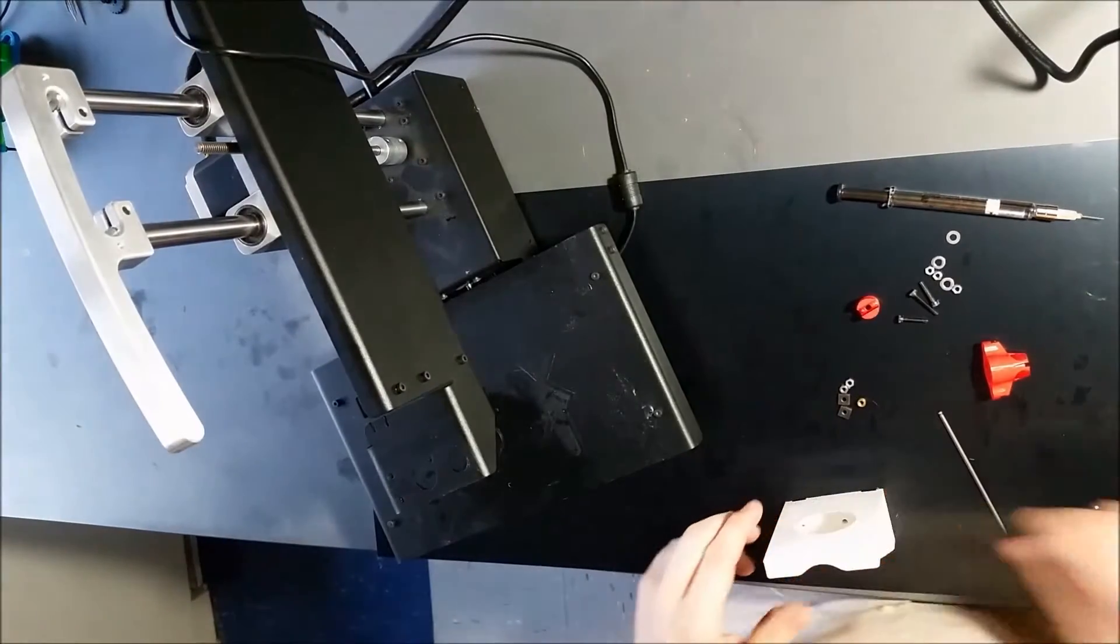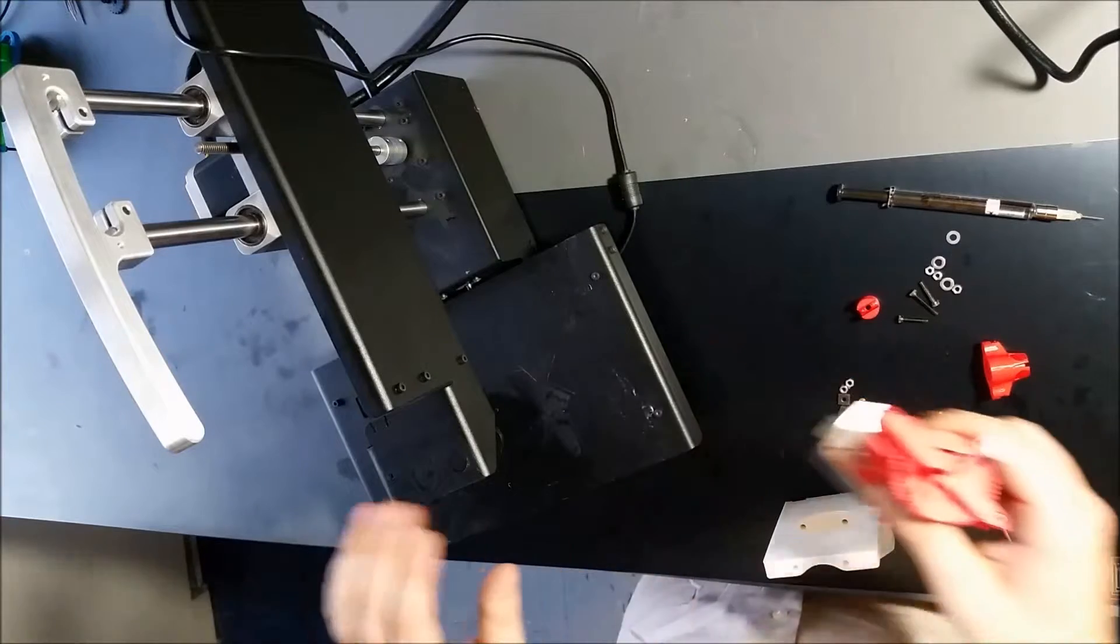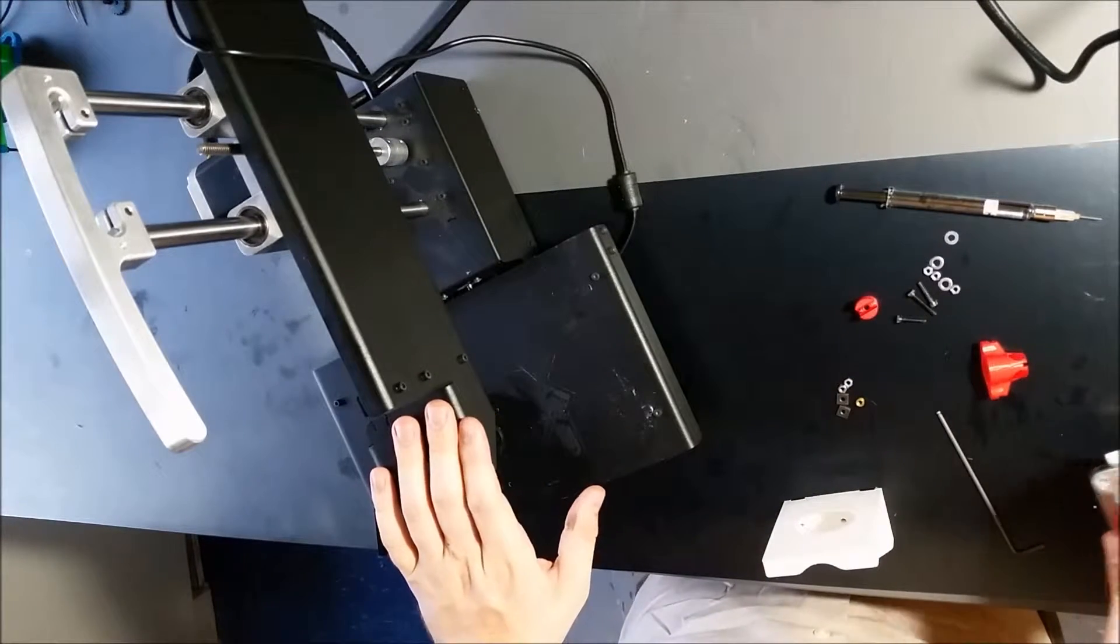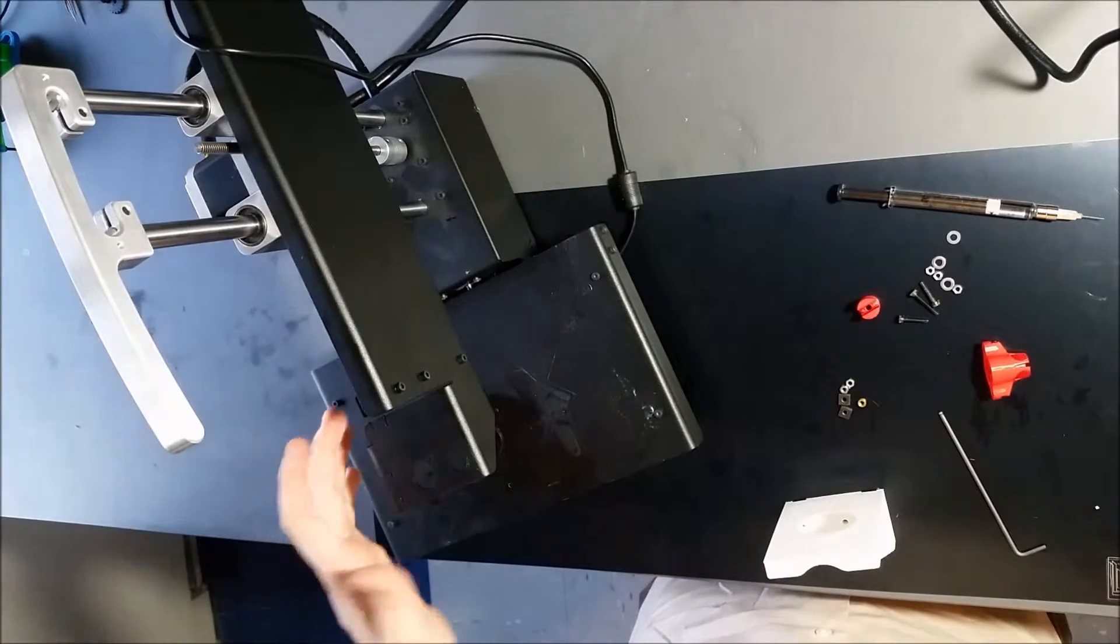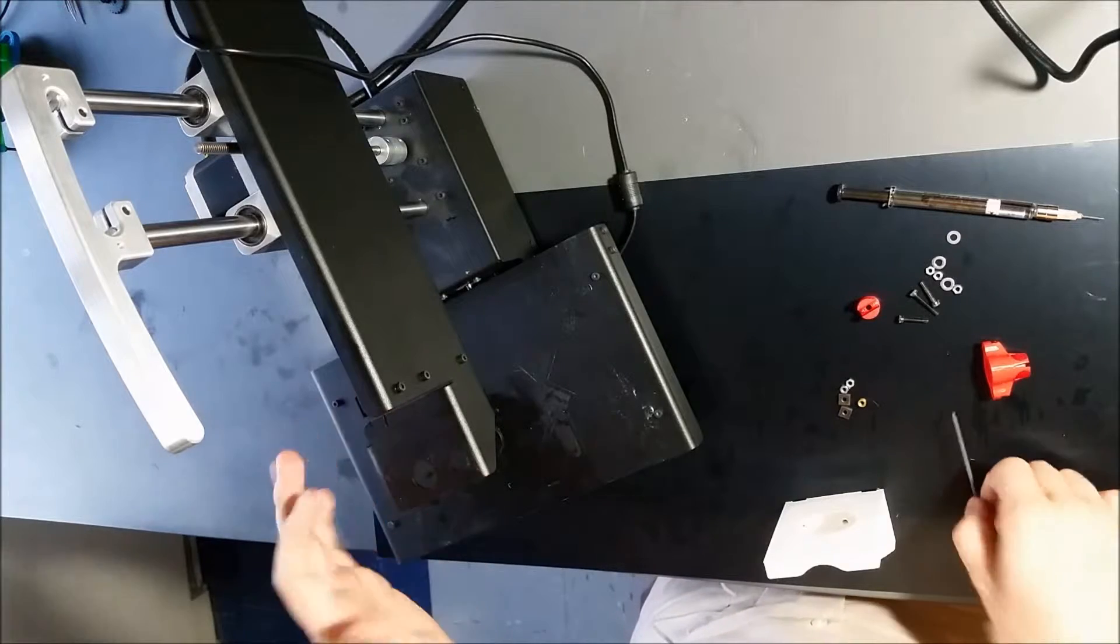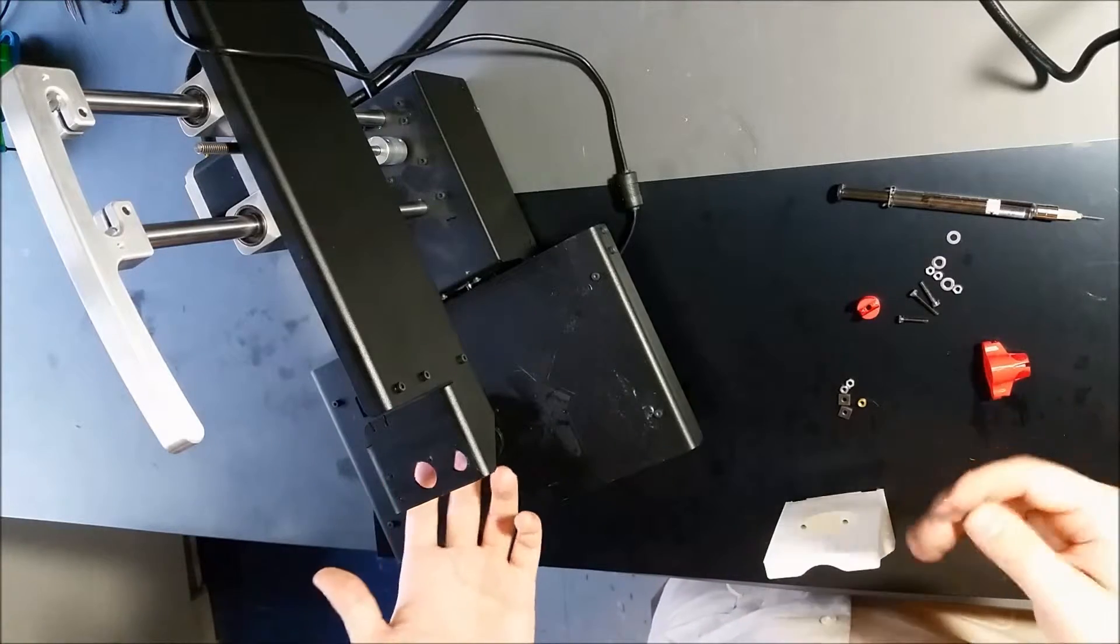We'll put this on the 3D printer. Okay, so now we're going to attach the Replostruder that we put together onto this printer-bought Simple Metal. We've taken the extruder off the Simple Metal. It should be pretty simple for you to do that. No pun intended.